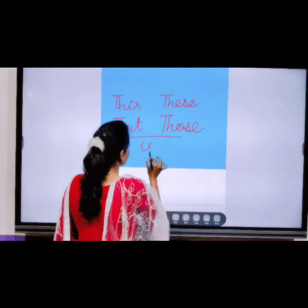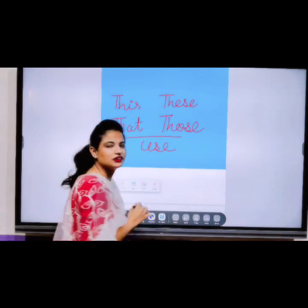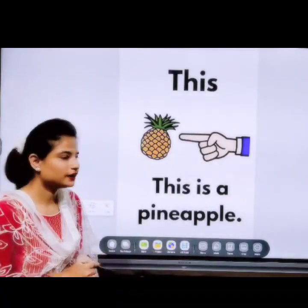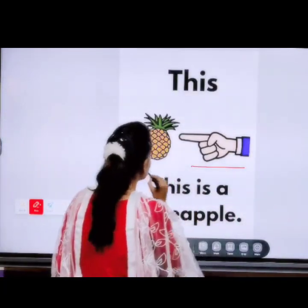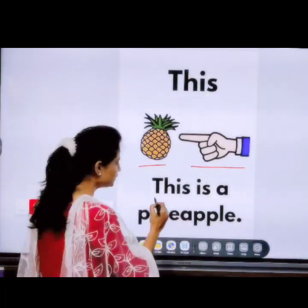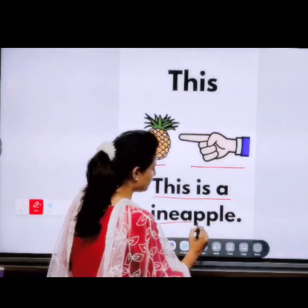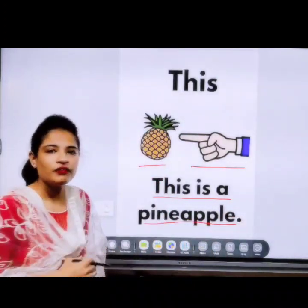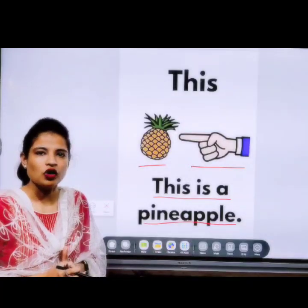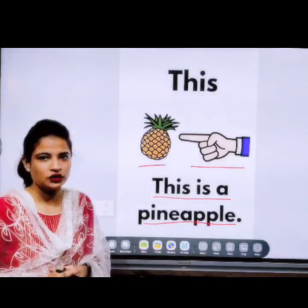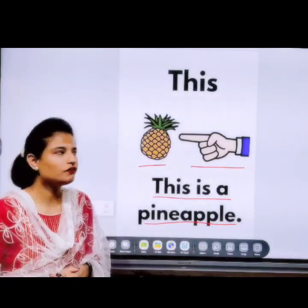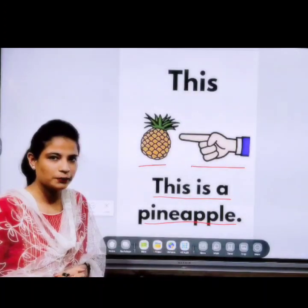In this picture, you can see this hand is close to this pineapple. So, the sentence formation is: 'This is a pineapple.' It means when we stand near the object, or the object is close to us, we use 'this'. And to specify something close, we will use 'this'. Okay?